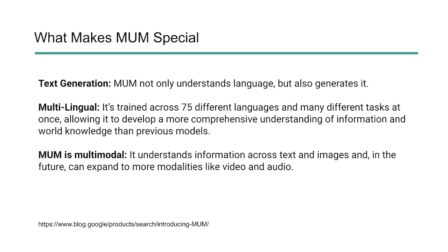MUM is also multimodal, which means it understands information across text as well as images. In the future, it's going to expand even further to things like video and audio. So not only can it read text and know what it means, it can look at an image, understand what's happening in that image, look for text within that image, and understand the connection between the two. It's going to be expanding into video and audio as well — a pretty big advancement for language models.